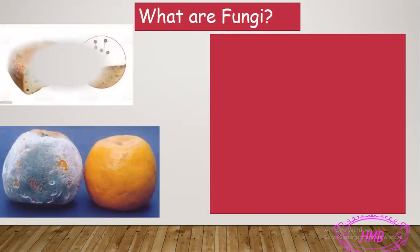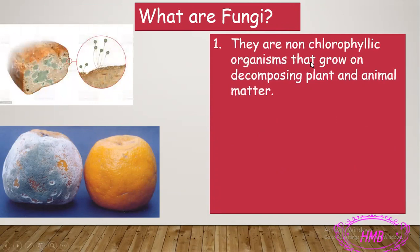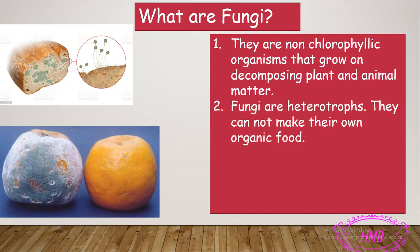Fungi are non-chlorophyllic organisms — they grow on decomposing plant and animal matter. Non-chlorophyllic means they don't have chlorophyll and so they don't perform photosynthesis. Because of this, fungi are heterotrophs, meaning they cannot make their own organic food, unlike green plants which perform photosynthesis.